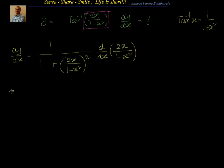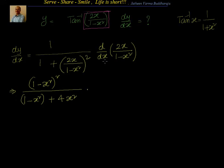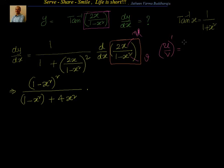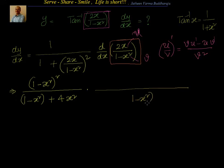If I simplify this, I will have dy by dx equal to 1 minus x square whole square divided by 1 minus x square whole square plus 4x square. Now for dy by dx of 2x by 1 minus x square, this is in the form of u by v, and we have to apply the quotient rule, which says u by v dash equal to v into u dash minus u into v dash divided by v square. So we have to find out d by dx of 2x by 1 minus x square, where v square is 1 minus x square whole square.